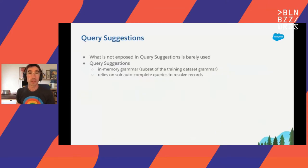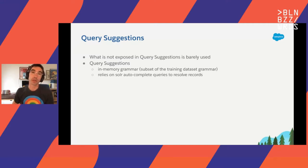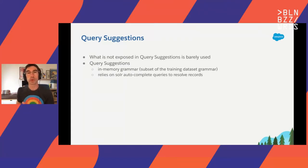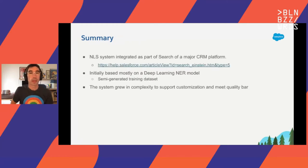Finally, we only briefly talked about query suggestion. It's really essential for feature discovery — concepts that were not exposed in query suggestion are barely used by users because they don't know if they exist. Even today, the majority of natural language search queries come from suggestion. Our query suggestion is based on an in-memory grammar, which is a subset of the training dataset grammar, and we use Solr autocomplete queries to resolve records.